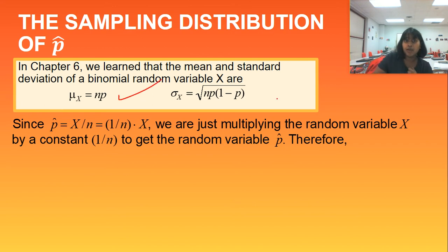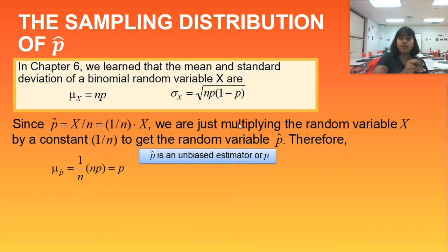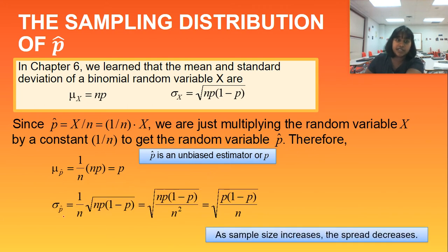Since we know this formula and we know this formula, and I just told you that p-hat can be written as X divided by n or 1 over n times X. X over n is equivalent to 1 over n times X. That's what they're saying. We're just multiplying your random variable by the constant. So because of that, we can derive some more formulas. We can derive that the mean of p-hat would be equivalent to 1 over your sample size times sample size times your proportion. And that would be equivalent back to your p value. So this means that you have an unbiased estimator of p. We could also look at our standard deviation in the same way.